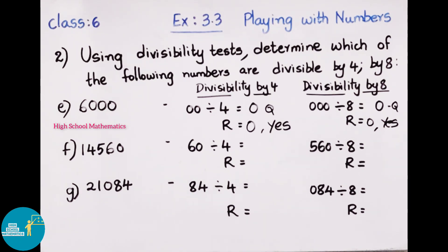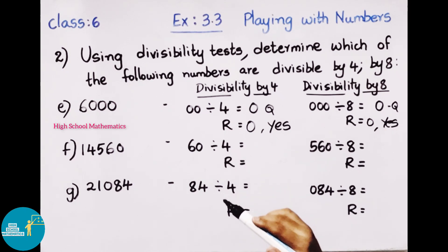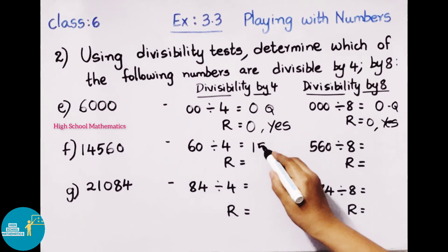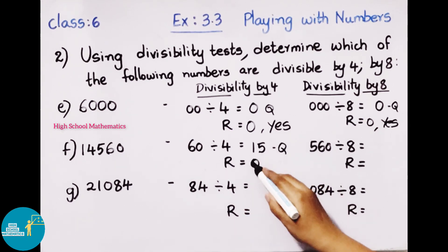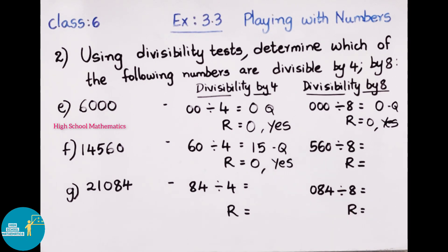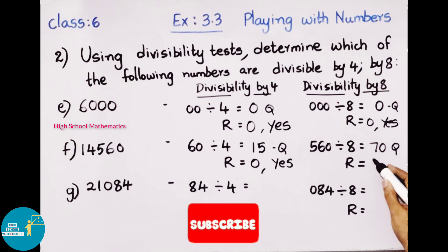Next number: 14,560. Checking divisibility by 4: last 2 digits are 60. 4 times 15 is 60, so quotient is 15, remainder is 0. Yes, it is divisible by 4. Checking divisibility by 8: last 3 digits are 560. 8 times 70 is 560, quotient is 70, remainder is 0. Yes, it is divisible by 8.